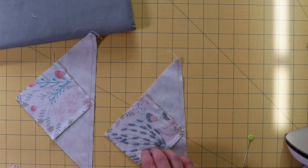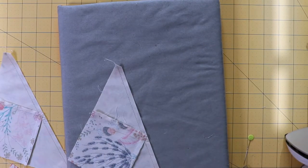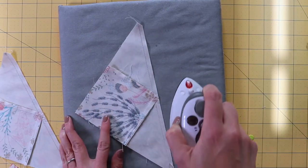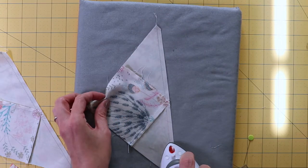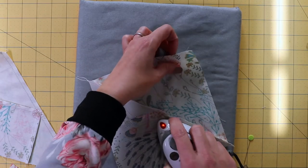So now that we have these trimmed, we're going to press the seams again. And you're going to press the seam towards the largest piece, so the large triangle.